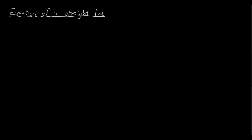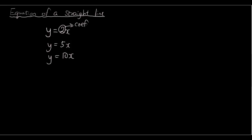So if you remember last lesson we started off with drawing equations, drawing the graph for equations such as y equals 2x, or y equals 5x, or y equals 10x. Basically the difference is the number in front of x, and this is called the coefficient of x. The first thing I want to show you is how changing this number at the front can change how the graph looks.